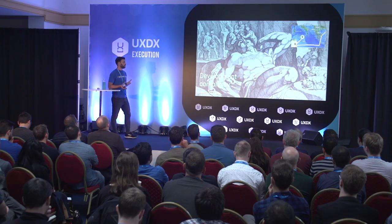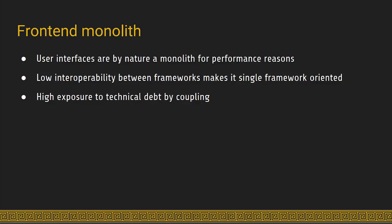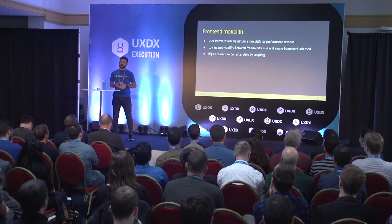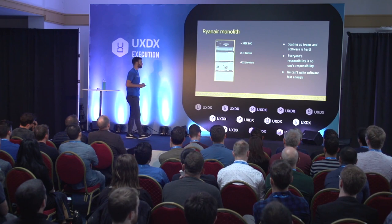We were discussing the backend shifting into microservices, but what about the frontend? The frontend by nature is generally a monolith — mainly for performance reasons. Different frameworks like React, Angular, and Vue don't really work well together. This led to high exposure to technical debt, similar to what the backend was experiencing before shifting into microservices. To give an example: the Reiner website is a single-page application built in AngularJS, with more than 300,000 lines of code — and that's only the frontend — with 75 routes translating to roughly 75 pages.